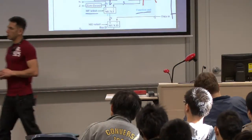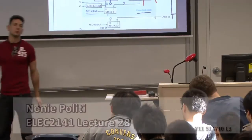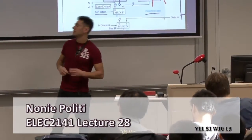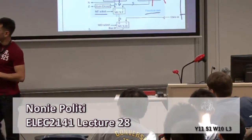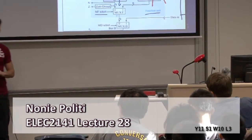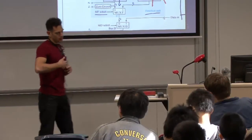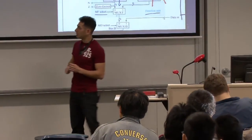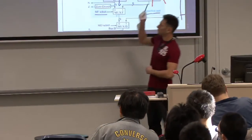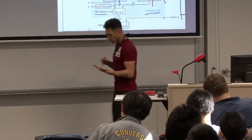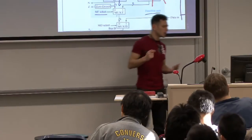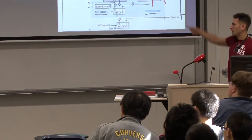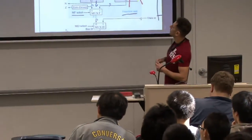On Tuesday I introduced the way that basic computers work and said that usually a computer is made of a control unit and a data path. I very quickly said the control unit controls the data path and sends out all the control signals so the data path can do the calculations on the data. We introduced how a generic data path might look like.